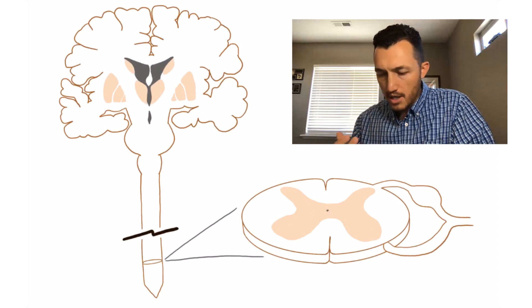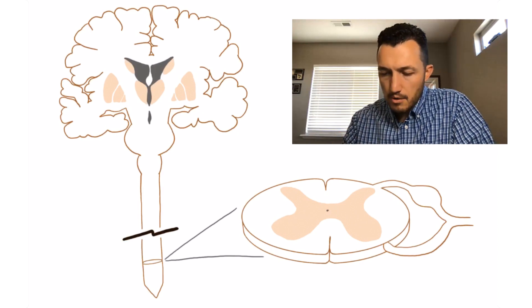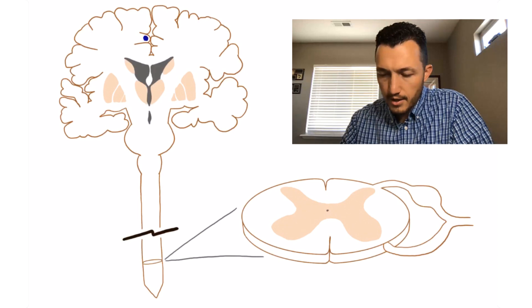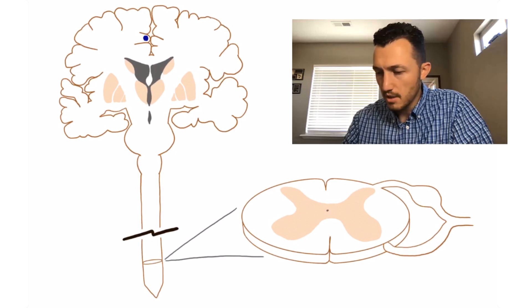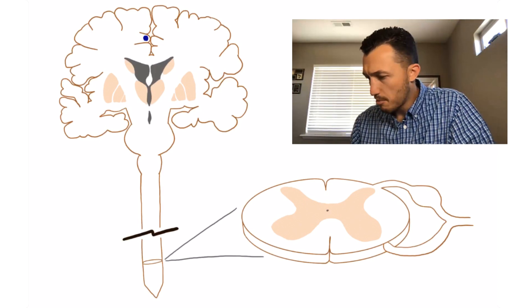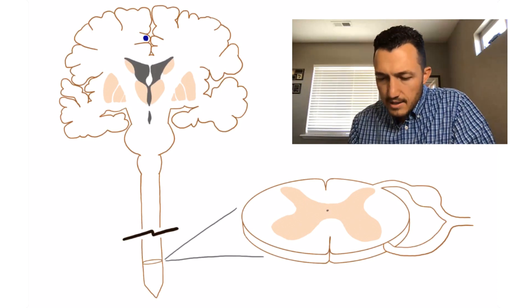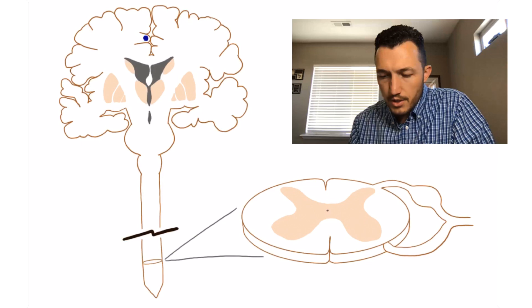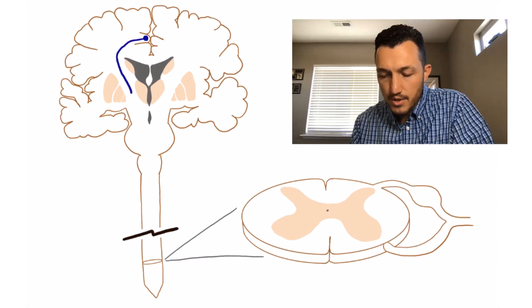So if you remember your homunculus, the motor neurons, upper motor neurons that help control the foot are here in the medial aspect, right? There in the paracentral lobule component of the brain. And so there's the cell body of our upper motor neuron. We'll draw the upper motor neuron in blue.